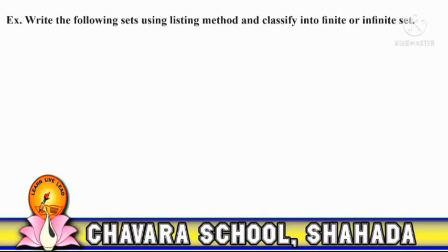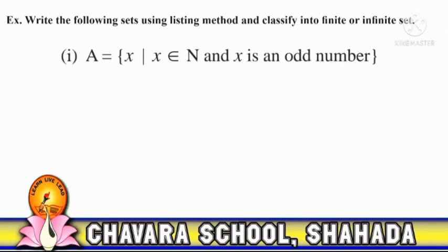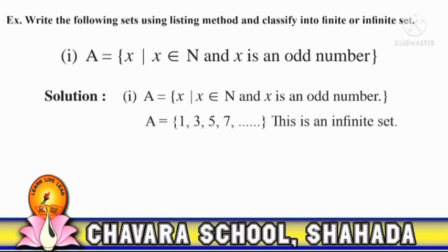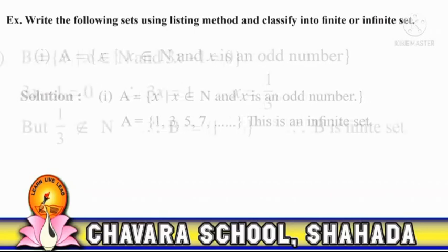Write the following sets using the listing method and classify them into finite or infinite sets. First: A is the set of all x such that x belongs to natural numbers and x is an odd number. Solution: A = {1, 3, 5, 7, ...}, which contains all natural odd numbers. This is an infinite set.